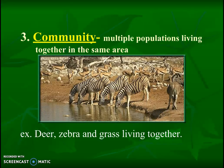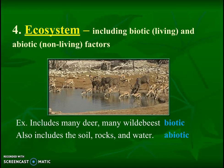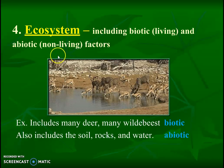What's bigger than a community? A community is all the living stuff — multiple types of populations. Now let's include the non-living things. Going back to the beginning of our year, we can use the words biotic and abiotic. An ecosystem has both biotic and abiotic things. For example, many deer and many wildebeest are the biotic things; soil, rocks, and water are the abiotic things. This is the first level where we include non-living things.